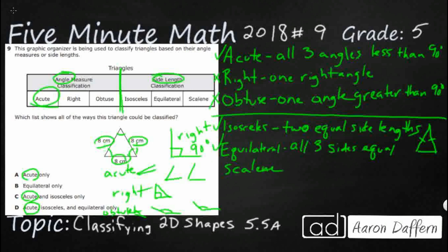Scalene is not going to happen. No side lengths equal. So those are just some really weird looking triangles. None of the side lengths are equal. All three are equal here. So I've got acute, I've got isosceles, I've got equilateral, which means my answer here is D.